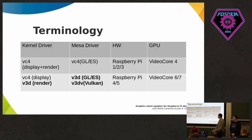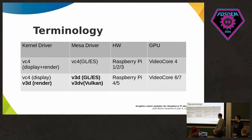For people not familiar with the terminology: we have five main Raspberry Pi device families. The Raspberry Pi 1, 2, and 3 use the GPU from Broadcom called VideoCore 4, and the Mesa driver is called VC4. For Raspberry Pi 4 and 5, they use VideoCore 6 and 7, with the driver called V3D for OpenGL ES, and V3DV for Vulkan.